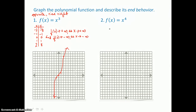Now let's look at the basic quartic. Because it's an even degree, I would expect it to have the same behavior left and right. The leading coefficient is positive, so I know it's going to rise right. I'll make a table of values again to find the middle portion of this graph.